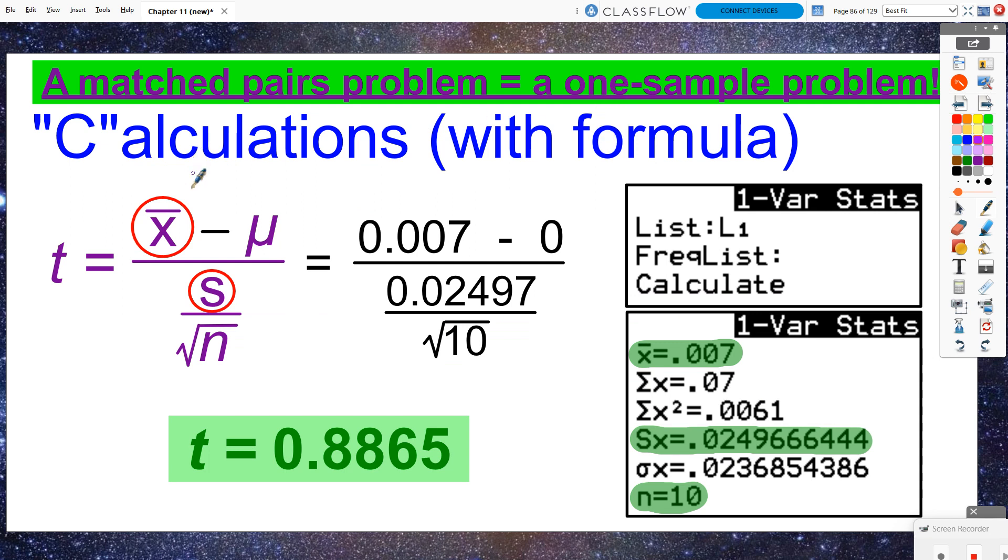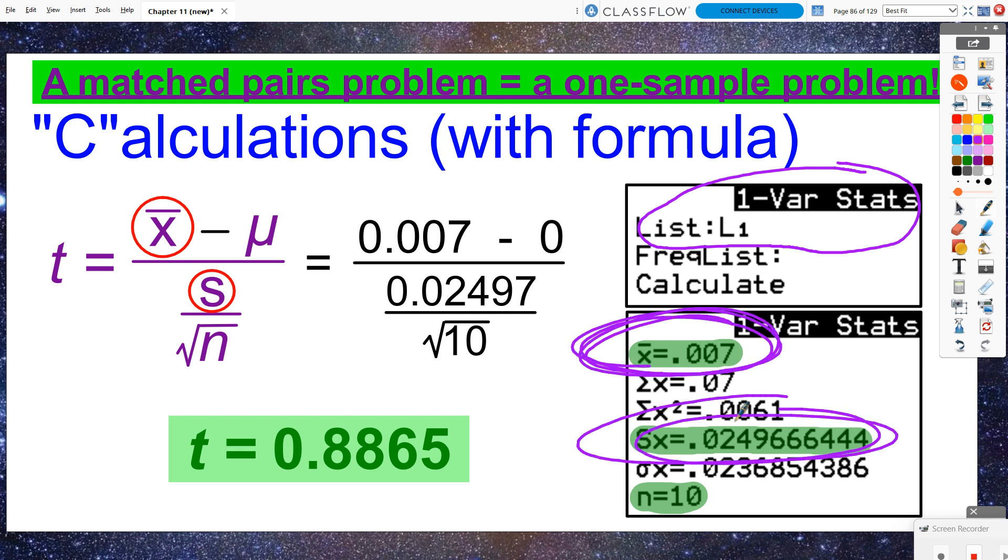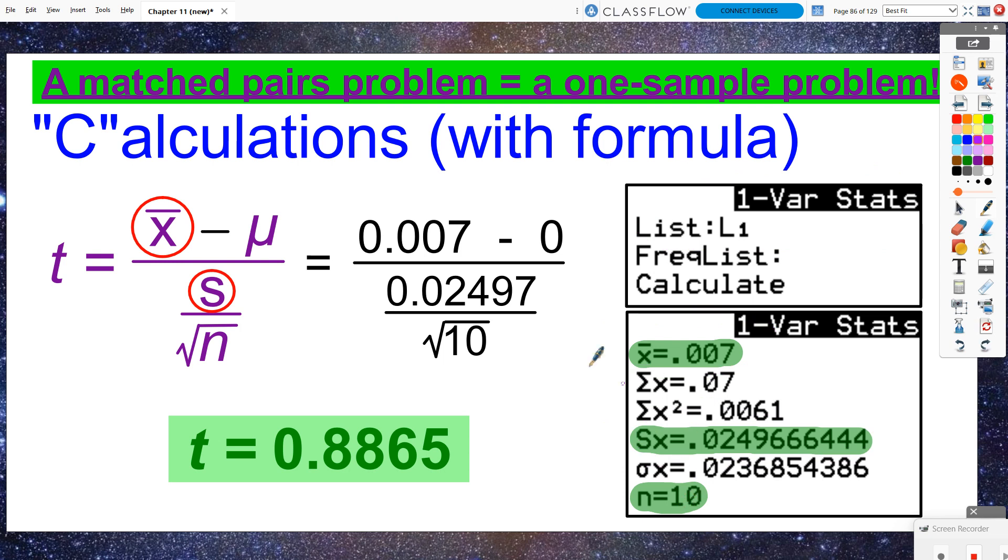I need a sample mean and a sample standard deviation, which I don't have. So if I go do some one variable stats on my list of differences, in this case list one, then I get what the sample mean and the sample standard deviation are that I would need to use there based on my sample size of 10. So then I plugged in what those numbers were.